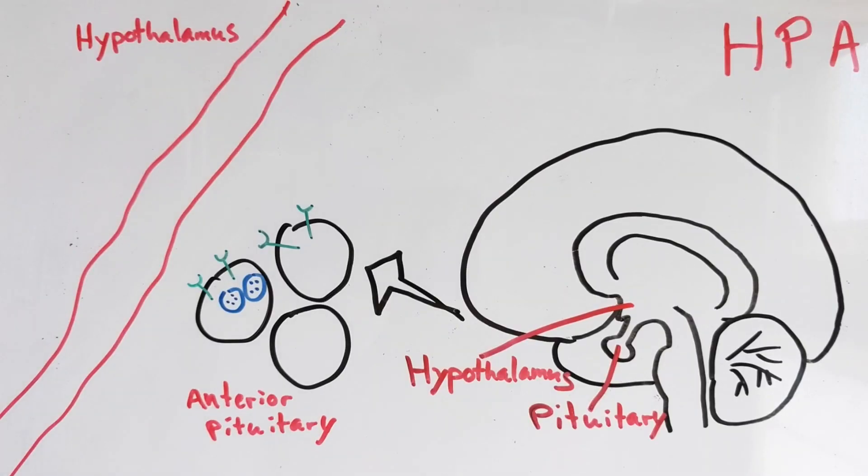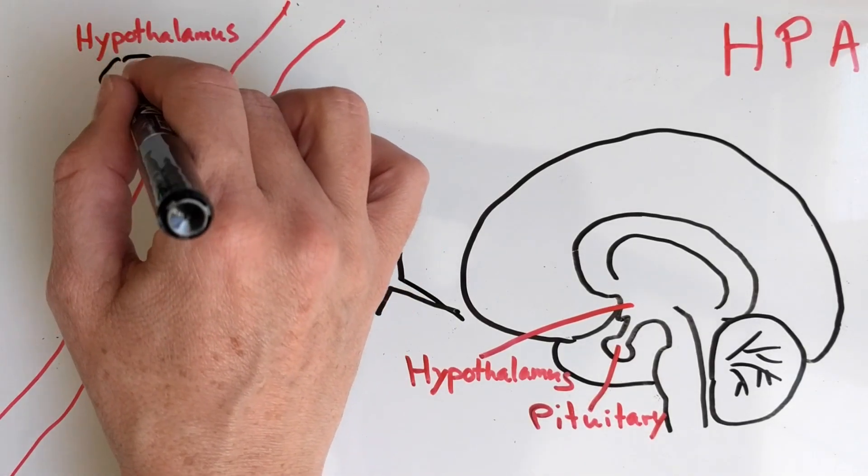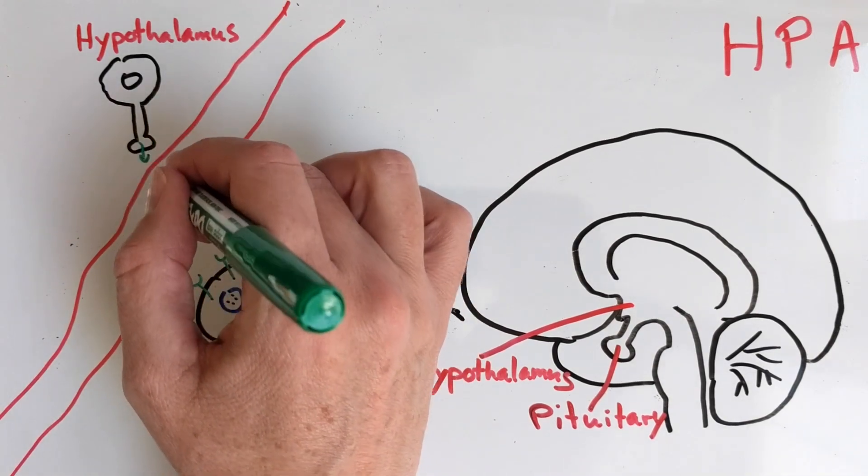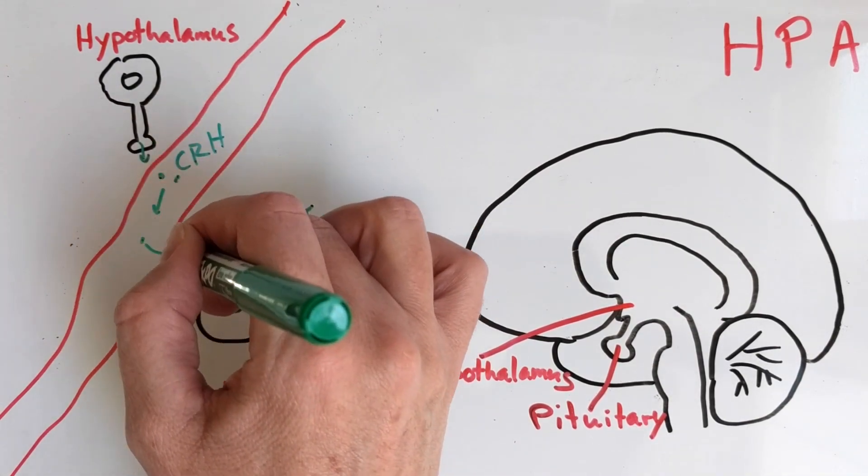When you are stressed out, neurons in the hypothalamus release a hormone called CRH into the blood, and it travels a short distance to the anterior part of the pituitary.